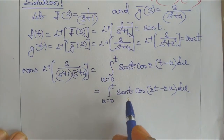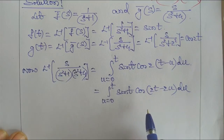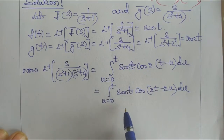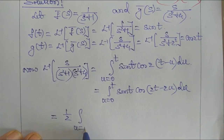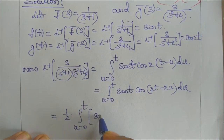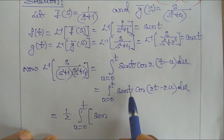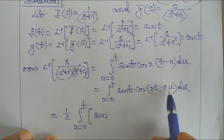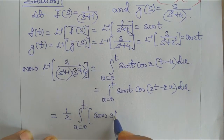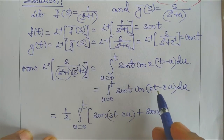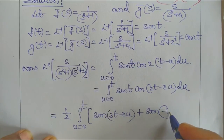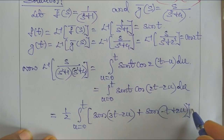Using the sine-cosine product formula: sin(A)cos(B) = ½[sin(A + B) + sin(A − B)]. Here A = U and B = 2T − 2U, so A + B = 3T − 2U and A − B = −T + 2U. The integral becomes ½ ∫₀ᵀ [sin(3T − 2U) + sin(−T + 2U)] dU.